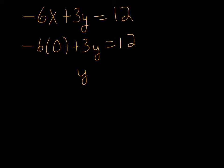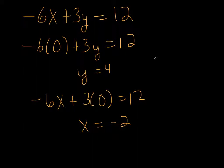And I get that y is 4. And if I do the same thing but put 0 in for y, I get that x is negative 2. So this one worked just fine. We get 0, 4 and negative 2, 0, and those we can plot on our graph just fine.